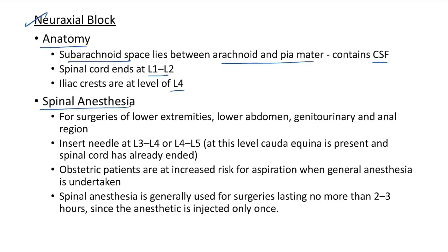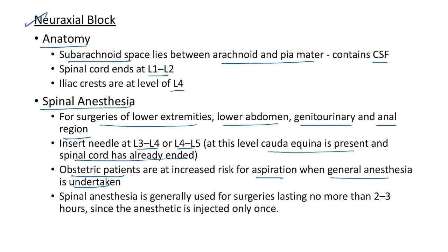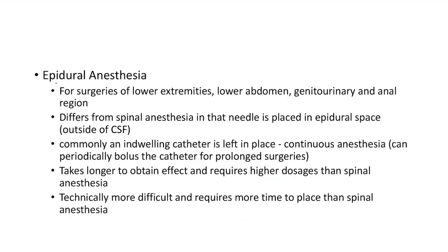Now let us see about spinal anesthesia. Indications include surgeries of the lower extremities, lower abdomen, genitourinary, and anal region. We insert the needle at L3-L4 or L4-L5 — at the level of the iliac crest — where the cauda equina is present and the spinal cord has already ended. Obstetric patients are at increased risk for aspiration under general anesthesia, so spinal anesthesia is preferred. Spinal anesthesia is generally used for surgeries lasting no more than three hours, since the anesthetic is injected only once.